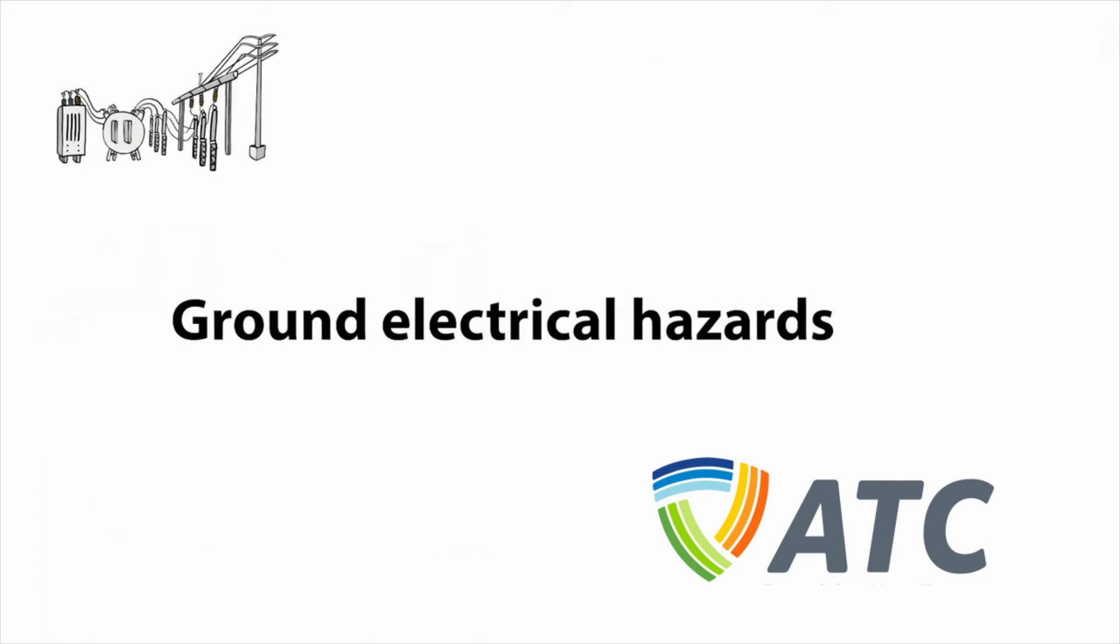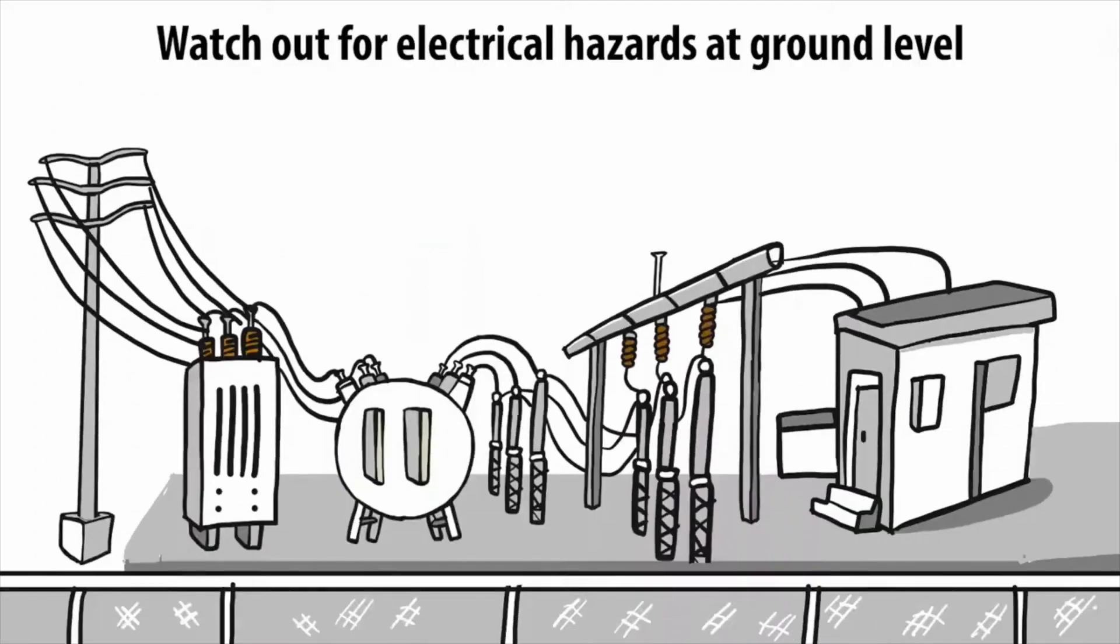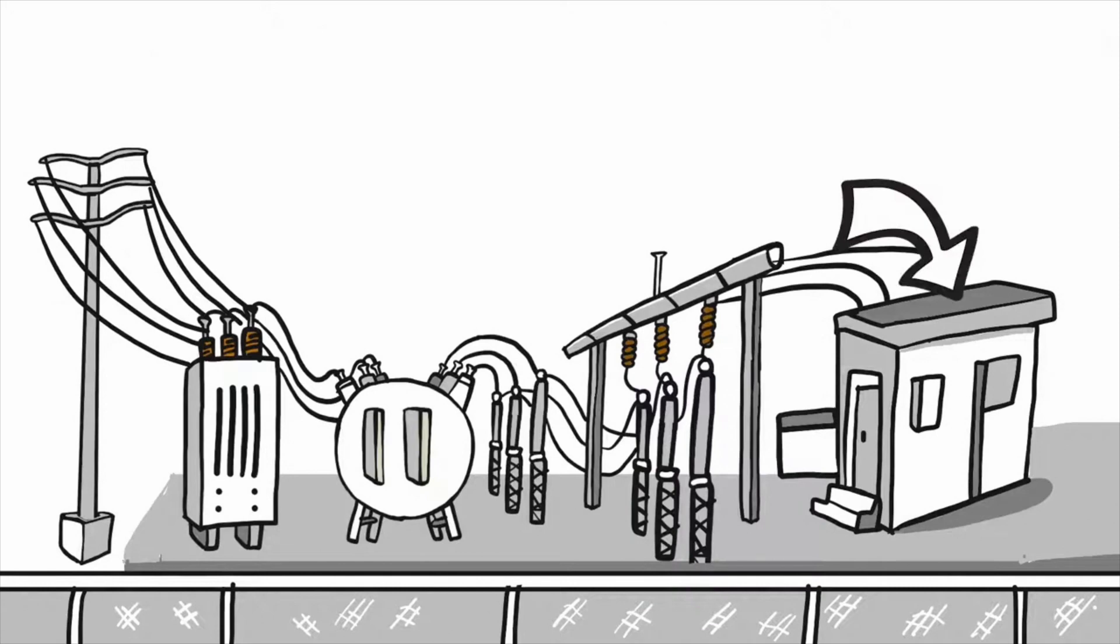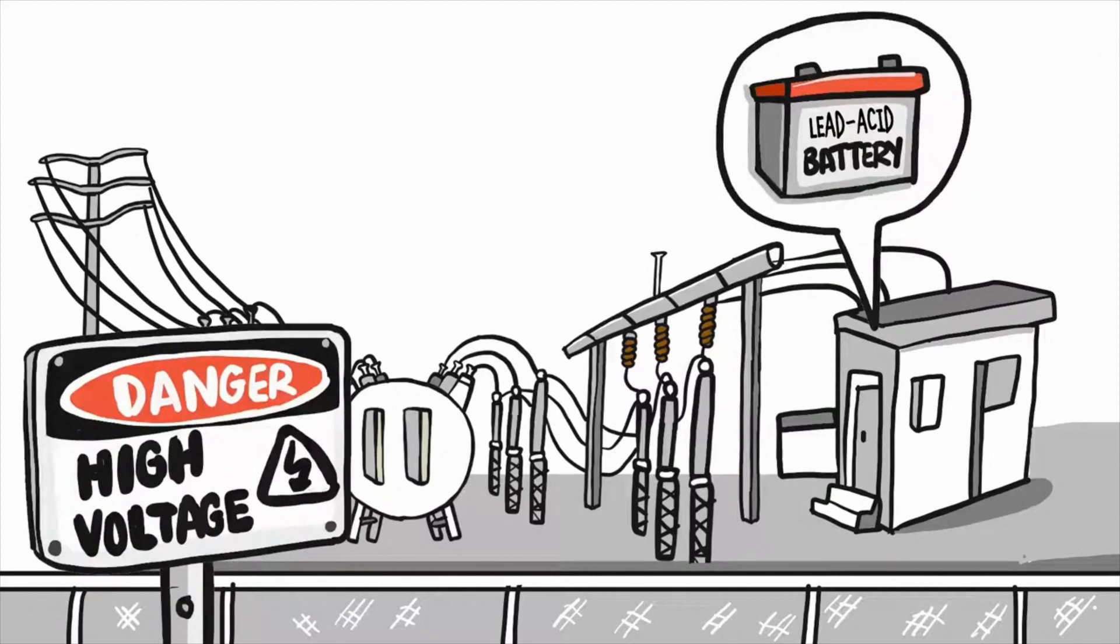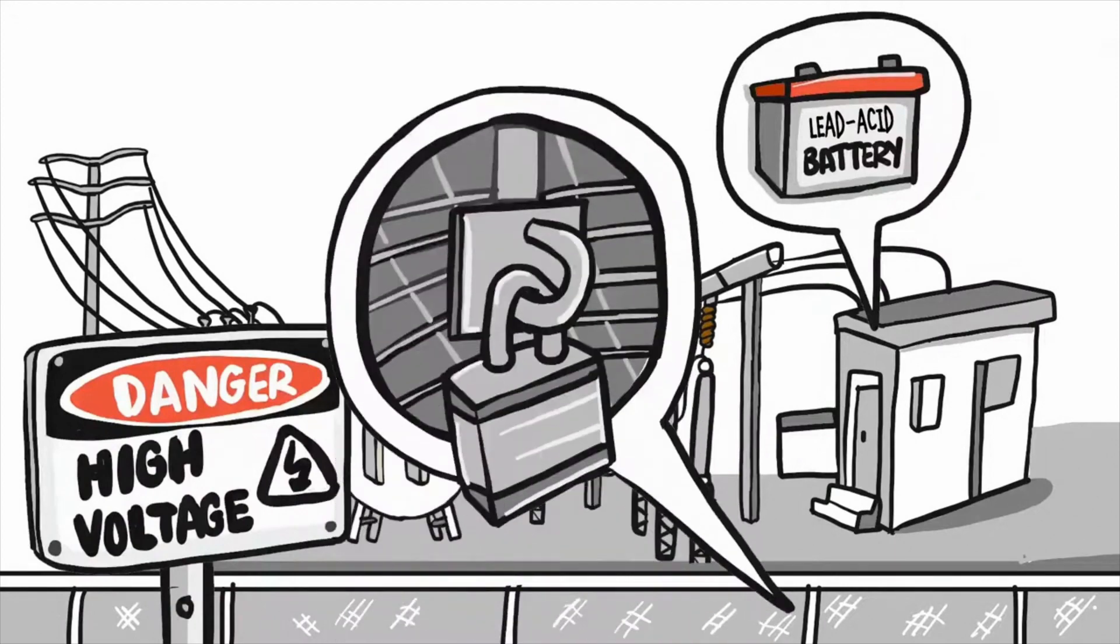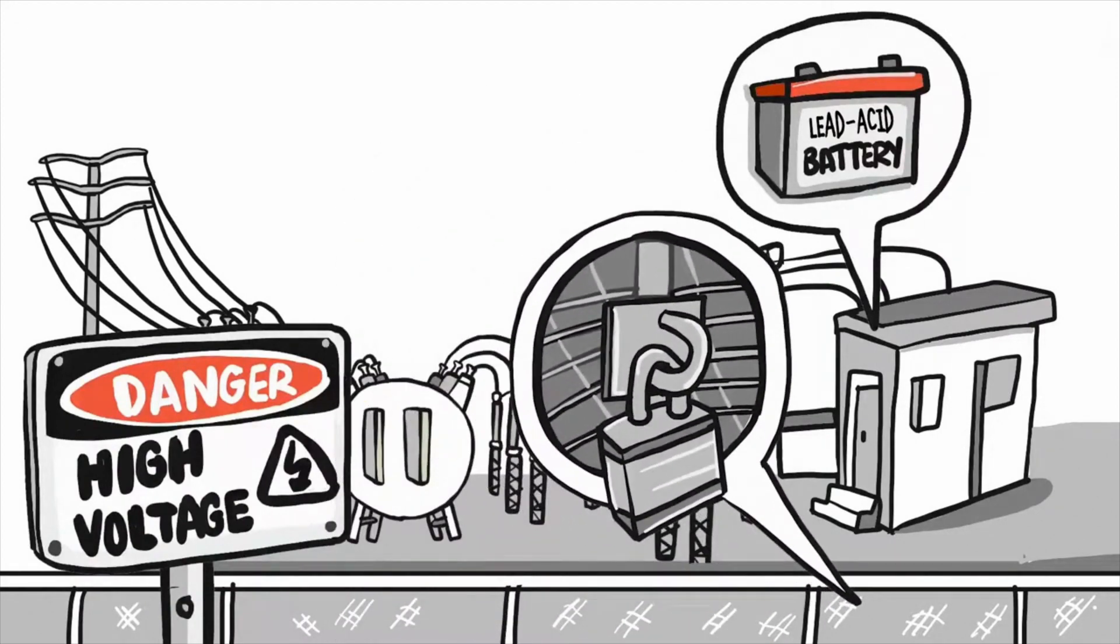Ground electrical hazards. Watch out for electrical hazards at ground level. Substation cabinets and control houses contain electrical equipment, including lead-acid batteries similar to large car batteries. Watch for and obey posted warning signs. Staying outside of locked doors, gates, and fences also helps keep you safe.